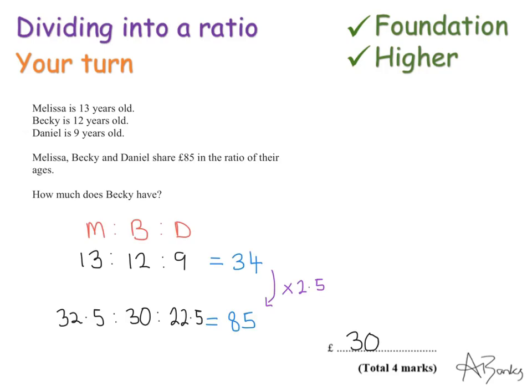Here's the full solution. So we've got Melissa, Becky, and Daniel, and they share it in the ratio of their ages. So that's 13 for Melissa, 12 for Becky, and 9 for Daniel. At the minute, these add up to 34.